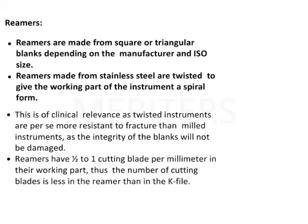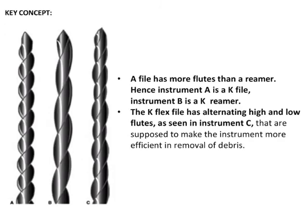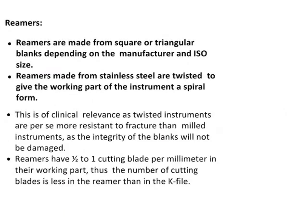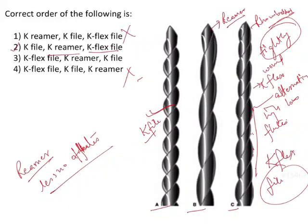Reamers are made from square or triangular blanks depending on the manufacturer and ISO size, made from stainless steel and twisted to give the working part a spiral form. Key concept: a file has more flutes than a reamer, hence instrument A is the reamer, instrument B is the K file. K flex has alternating high and low flutes as seen in instrument C. So the correct identification is: A is K file, B is K reamer, C is K flex file. Option 2 is the answer.